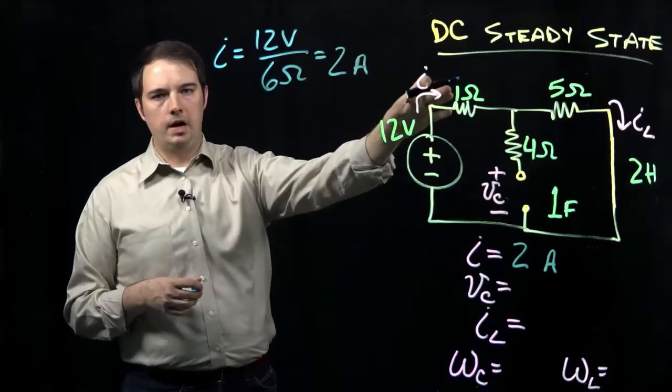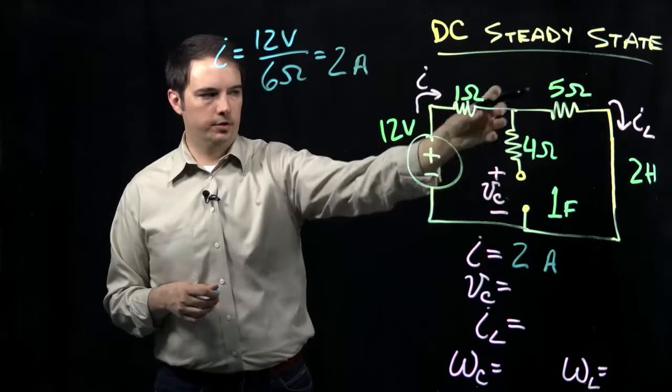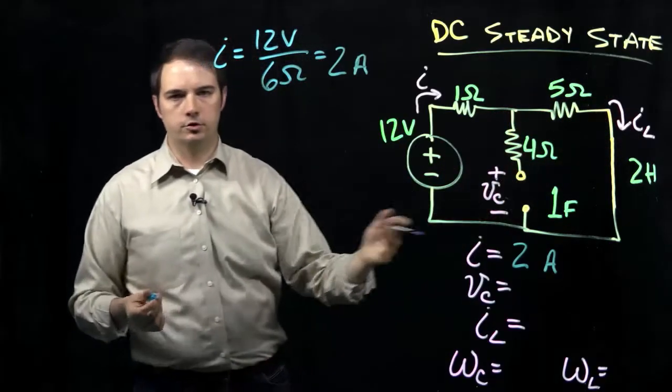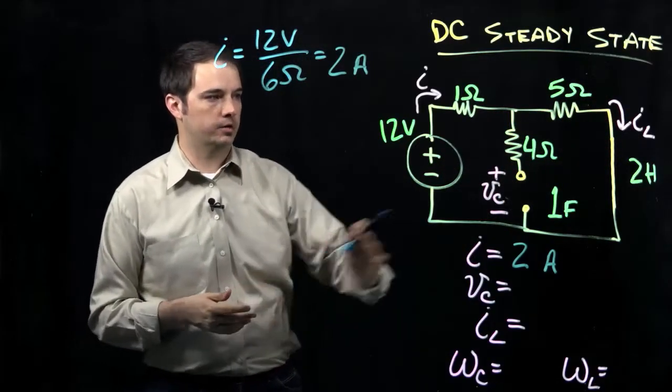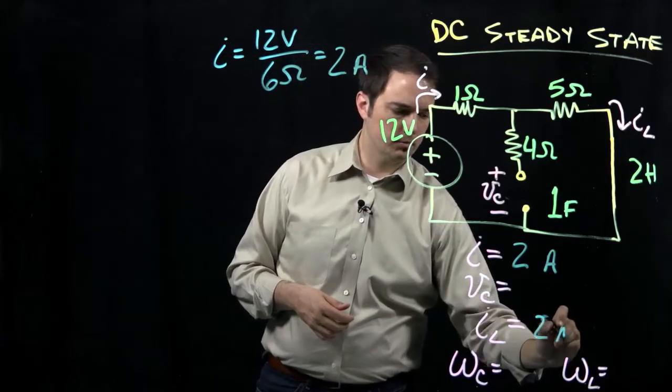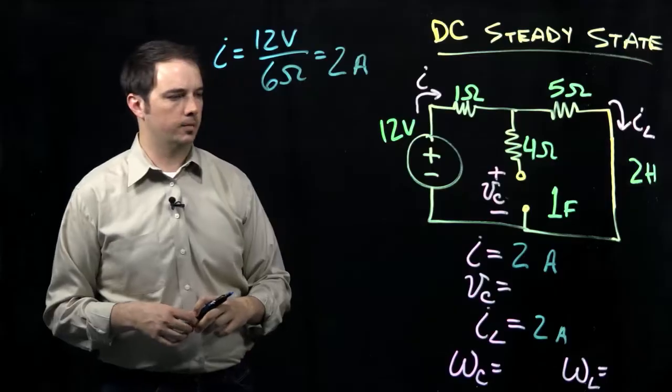Now, knowing that that current I is 2 amps, and knowing that there's no current flow down the middle branch, well, then we certainly know what the current would be through that inductor because the inductor is sitting in this branch, so it would have to be the same as I, so that would also be 2 amps.